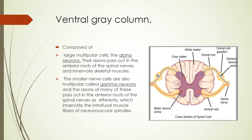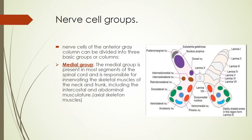First, the ventral gray column or anterior horn — that is, motor. It is composed of multipolar cells: the large neurons are called alpha neurons and the smaller are called gamma neurons. The axons of alpha neurons pass as efferents in the anterior or ventral roots of the spinal nerves and innervate skeletal muscles, while the gamma neuron axons also pass out in the ventral root and innervate intrafusal muscle fibers of the neuromuscular spindles.